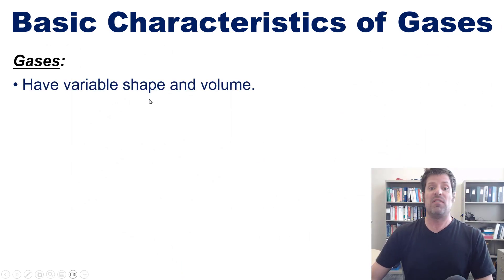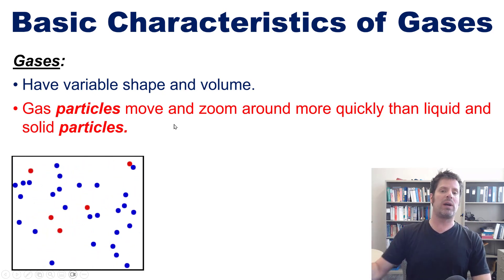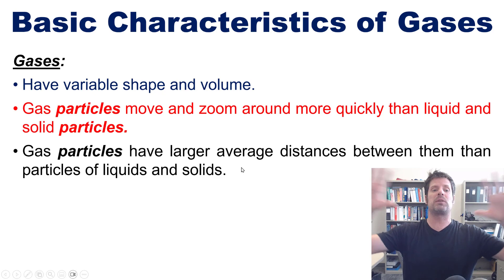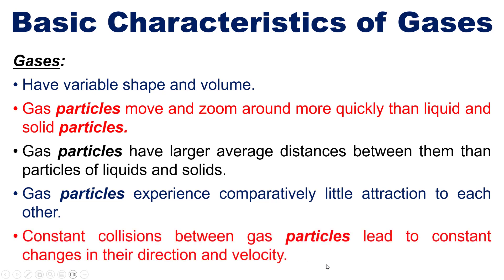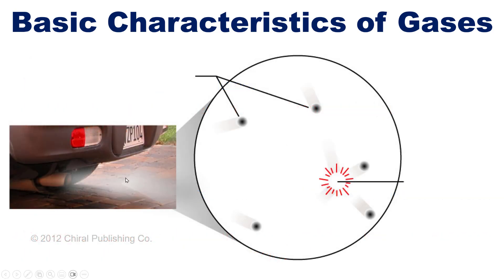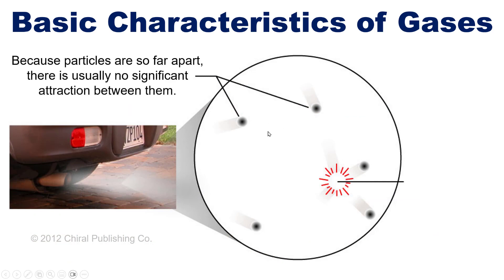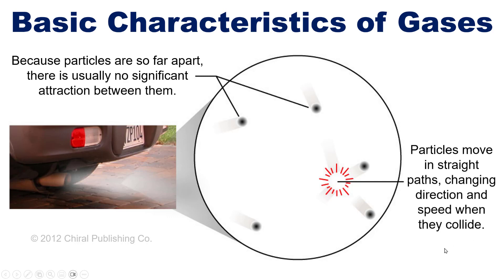Gases have variable shape and volume. Their particles move and zoom around much more quickly than those of liquids and solids. Gas particles have larger distances between them on average, experience comparatively little attraction to each other, and constant collisions lead to constant changes in their direction and velocity. Because particles are so far apart, there is usually no significant attraction between them, and they move in straight paths, changing direction and speed when they knock into each other. At a molecular level: solids move like this, liquids move like this, and gases move like this.